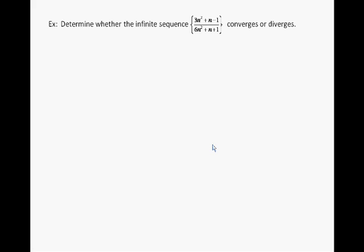I'm going to end this presentation with an example for you to work on. Determine whether the infinite sequence converges or diverges — in this case we have the rational function 3n squared plus n minus 1, over 6n squared plus n plus 1.